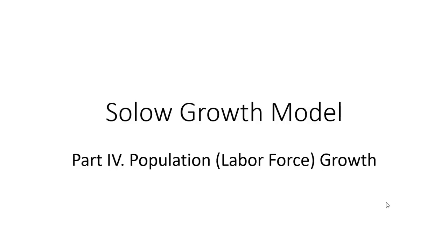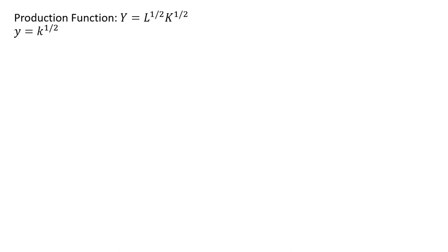Hello, this video is going to look at population growth inside the Solow growth model. Here's our production function, and then our per worker production function is given as follows: lowercase y is output per worker, and lowercase k is the capital labor ratio or capital per worker.